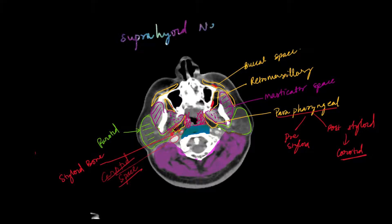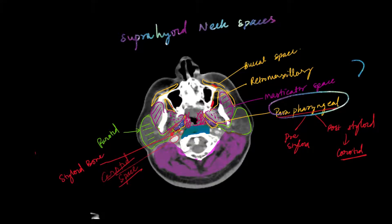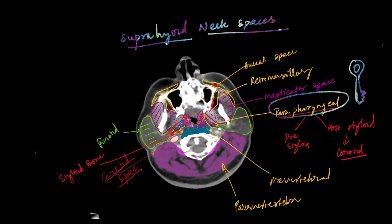One of these spaces will come under the category of supra-hyoid and infra-hyoid neck spaces. The most important of these is the parapharyngeal space — it is the key when it comes to the supra-hyoid space.